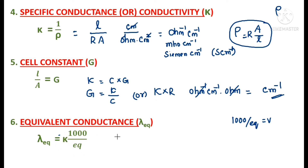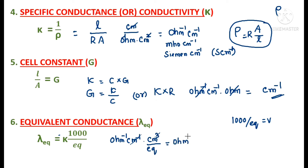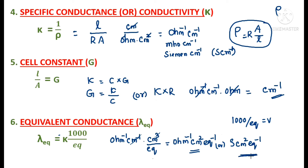To find the unit for equivalent conductance: κ has unit ohm⁻¹·cm⁻¹, and 1000 cm³ is in the numerator. So: ohm⁻¹·cm⁻¹ × cm³ / eq = ohm⁻¹·cm²·eq⁻¹. This can also be written as siemens·cm²·eq⁻¹. These are the units for equivalent conductance.